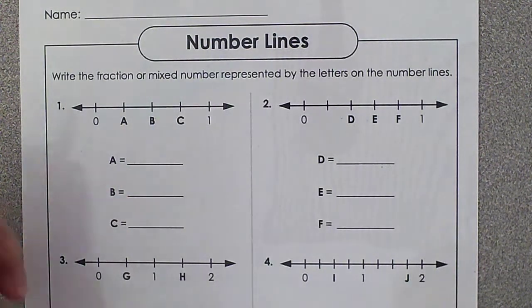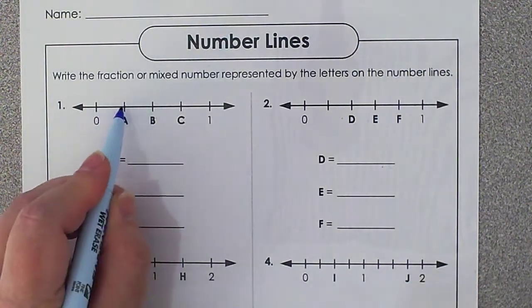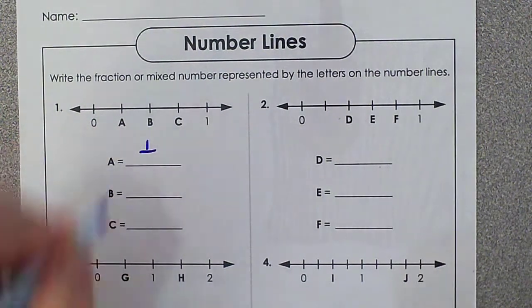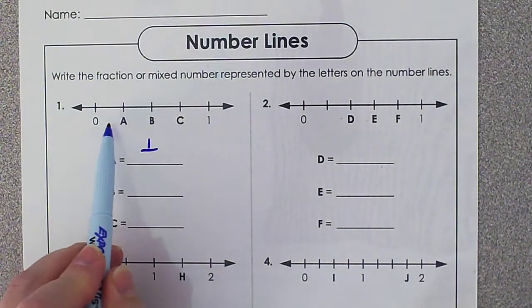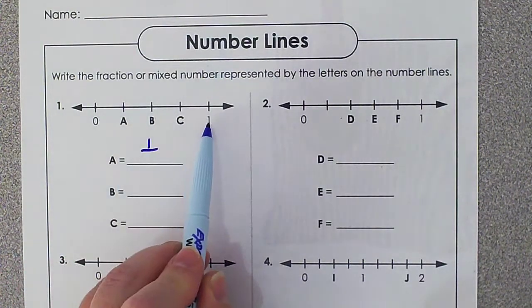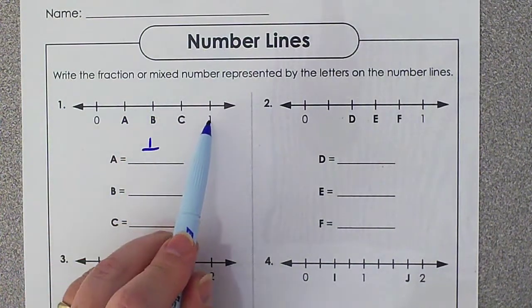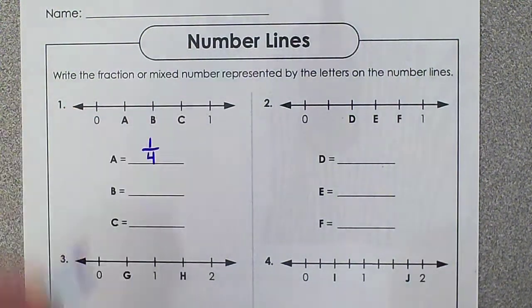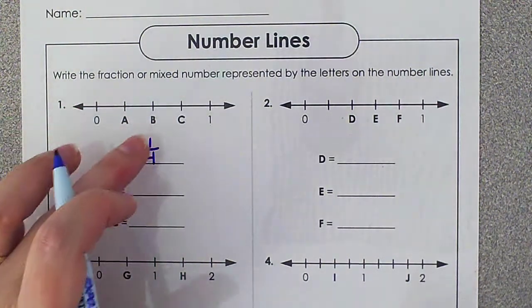So let's try this out. A is 1 mark over, so my numerator is a 1. My denominator is going to be how many marks it takes me to land on that 1. So 1, 2, 3, 4. Our line is cut up into 4 parts. Our fraction for A is 1/4.